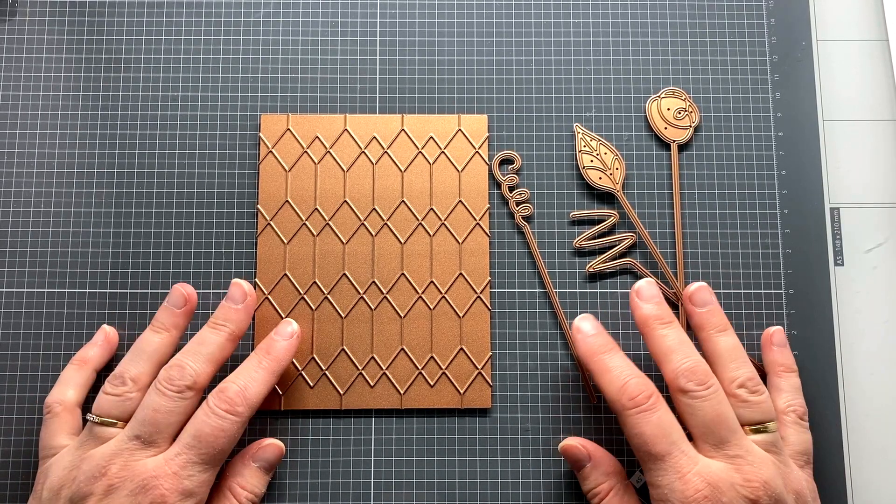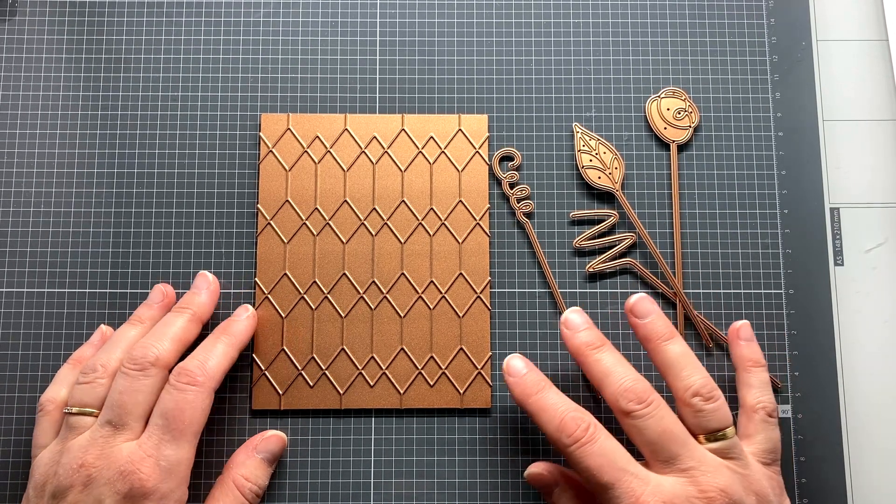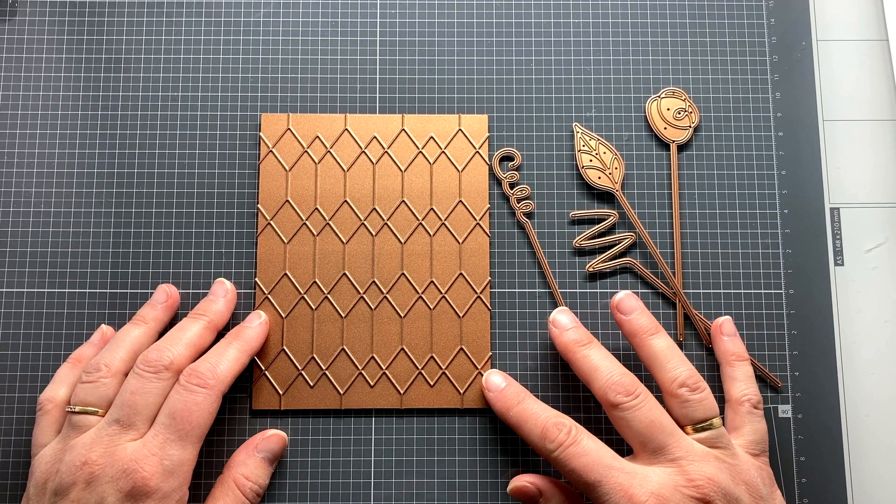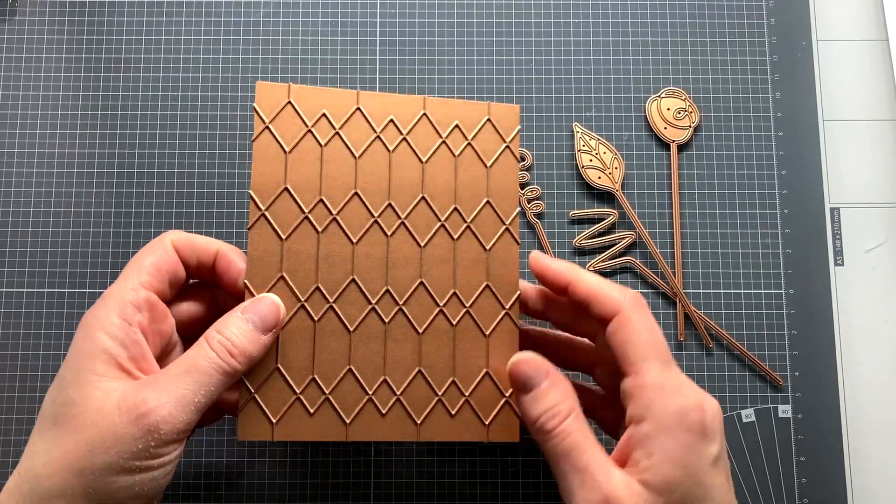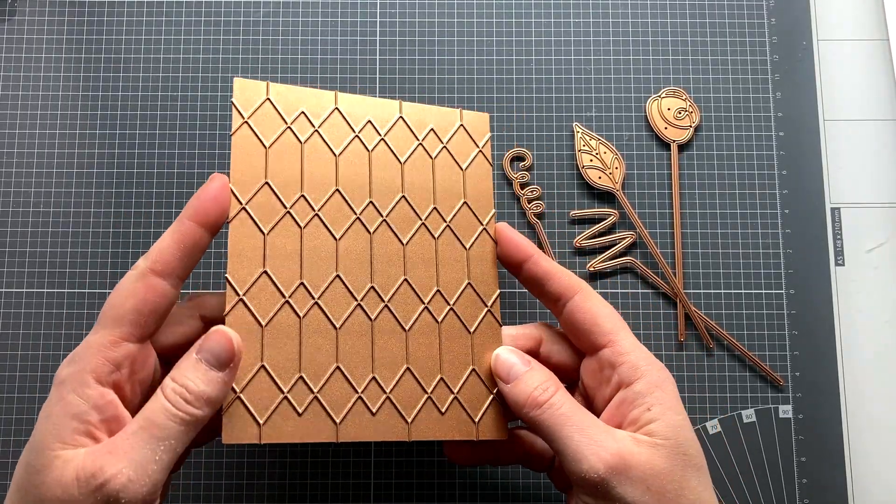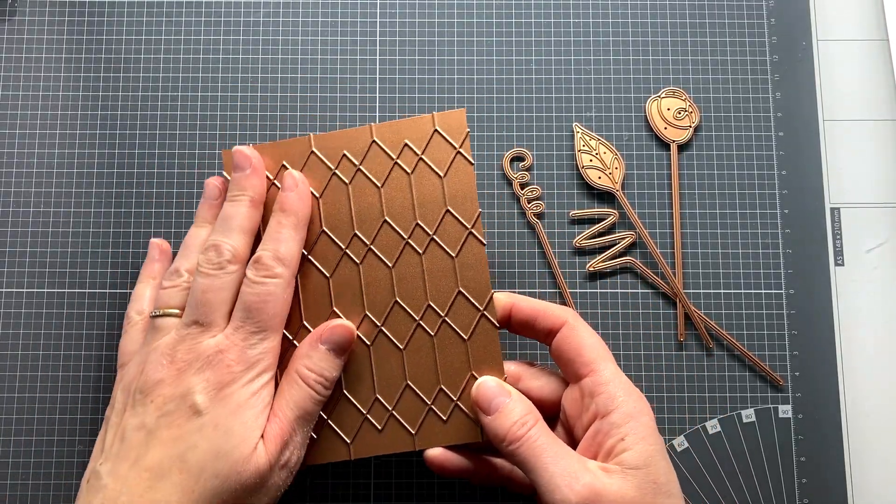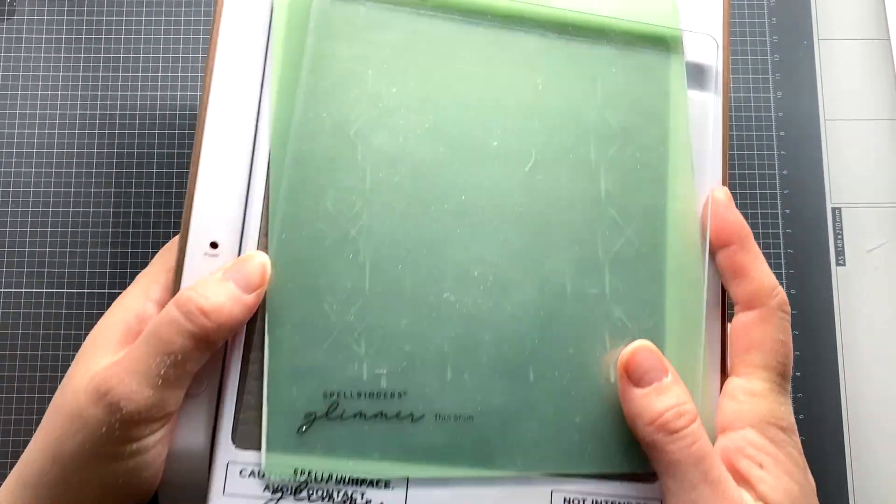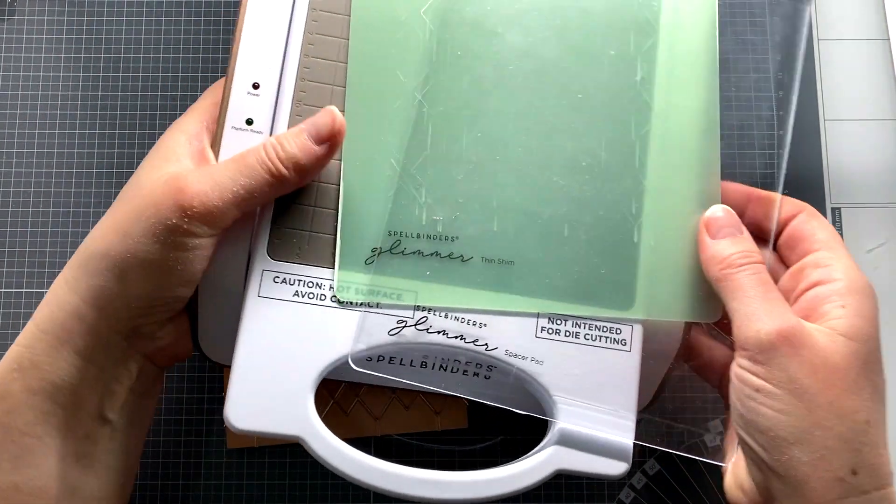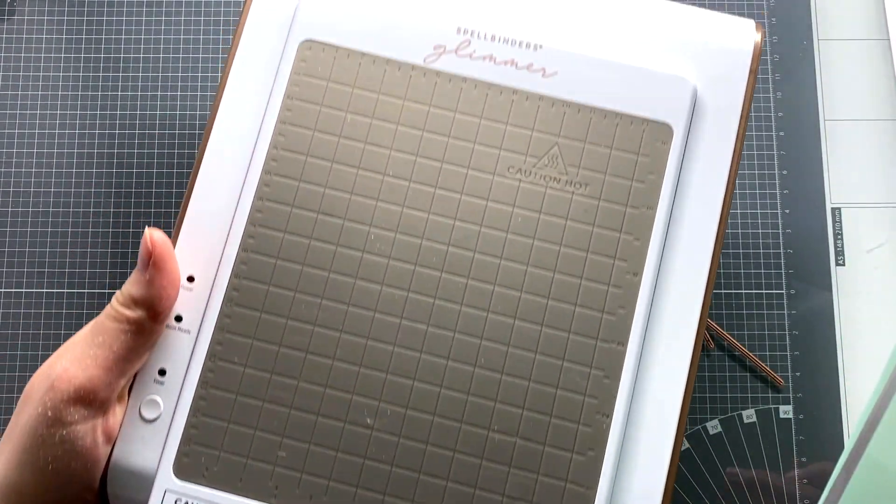In this video I'm going to work with the hot foil machine again. Today I'm using the Spellbinders Sealed Squiggles and the Geometric Diamond Background Glimmer Plate. I love it so much! To work with it you need a hot foil machine. You use it to heat the glimmer plate and then run the plates through your die cutting machine and seal the foil.